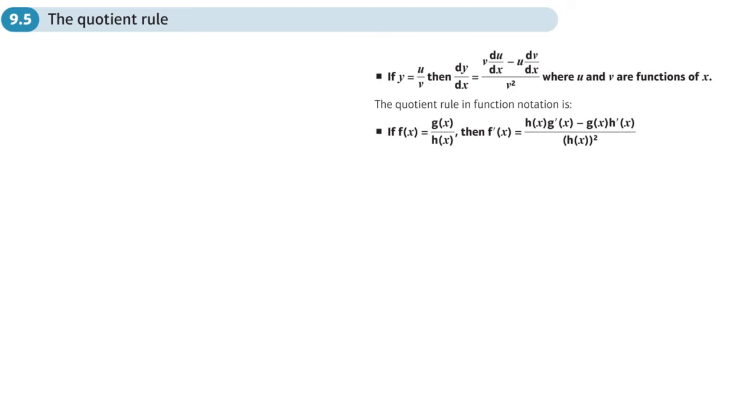This is the fifth section of chapter nine, the differentiation chapter, and here we're going to be looking at the quotient rule. This is a rule that's going to allow us to differentiate quotients, so what we're looking at is expressions of this form.